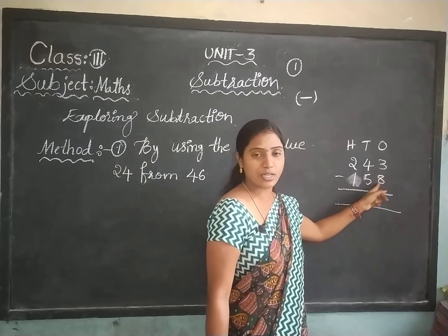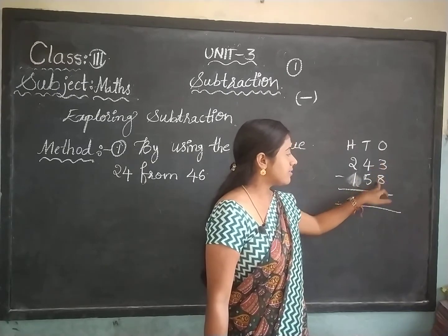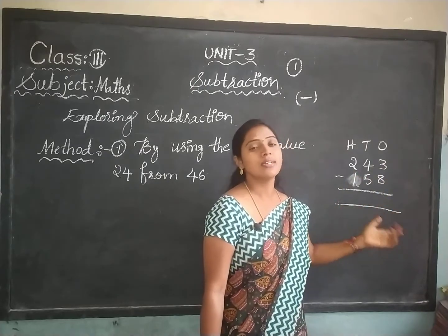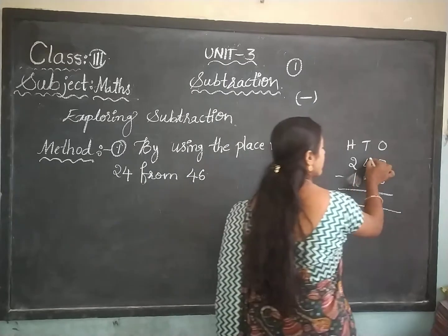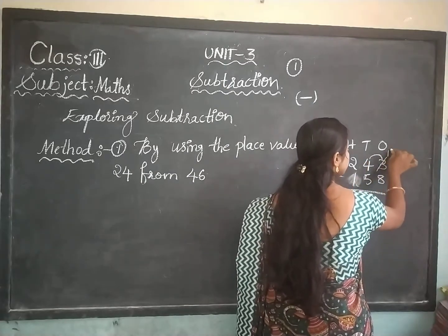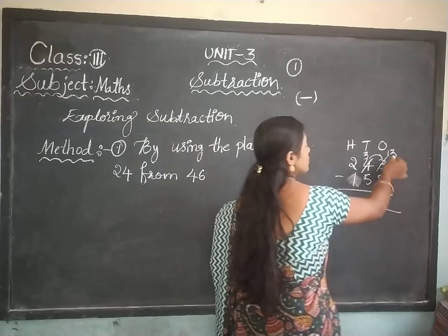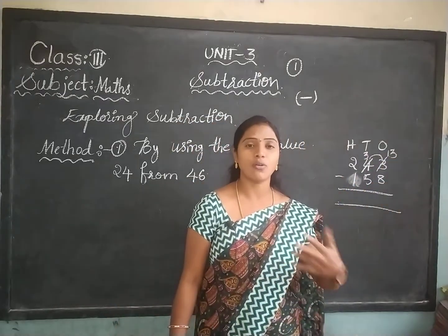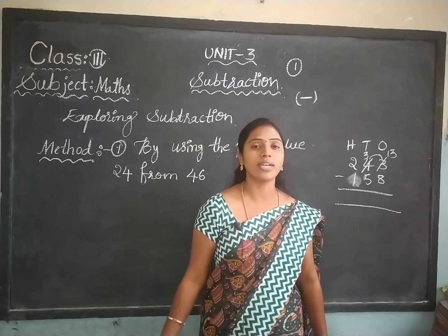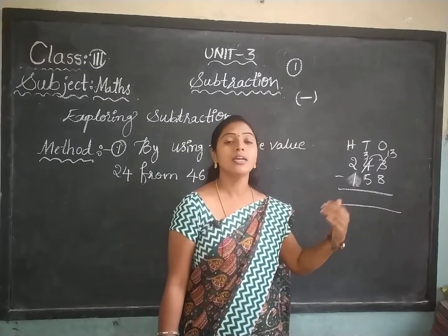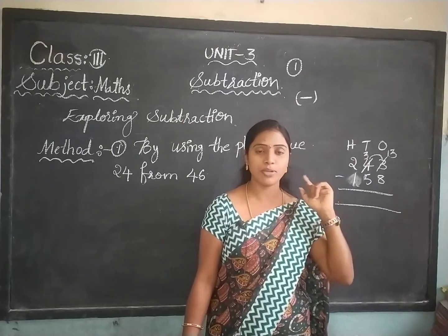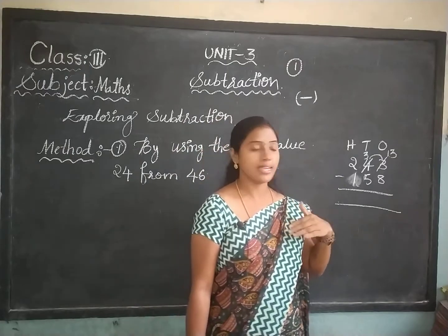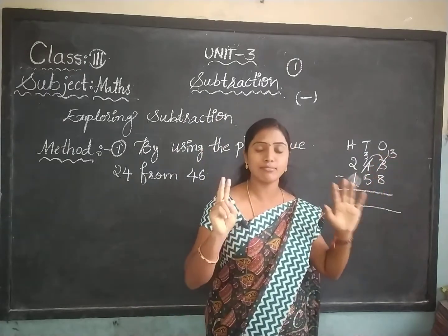See, in the ones place: 3 minus 8. How will we do it? 3 is a small number and 8 is a big number. So, can we subtract? No, we cannot subtract. So you have to take a borrow from the tens place. 3 becomes 13, and 4 becomes 3. So, 13 minus 8. Subtraction means we are counting before numbers. Children, you have to keep this in mind — subtraction means you have to count backwards.